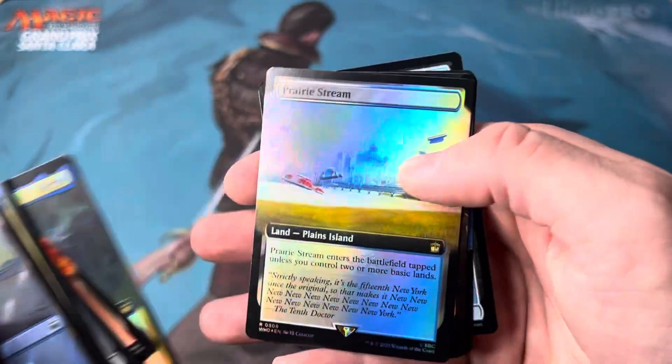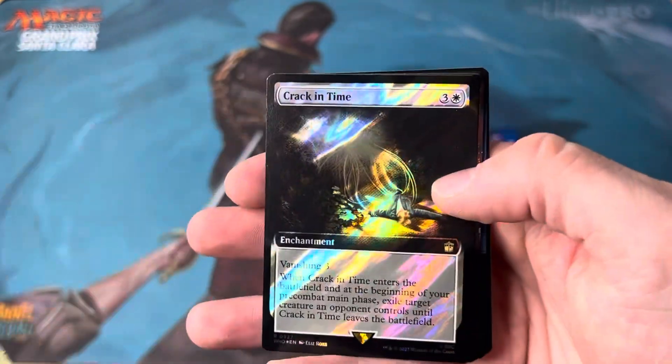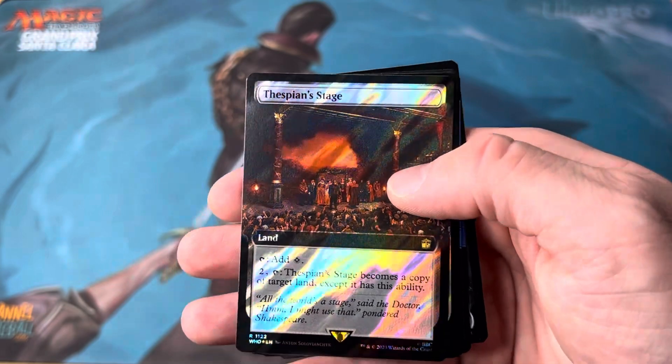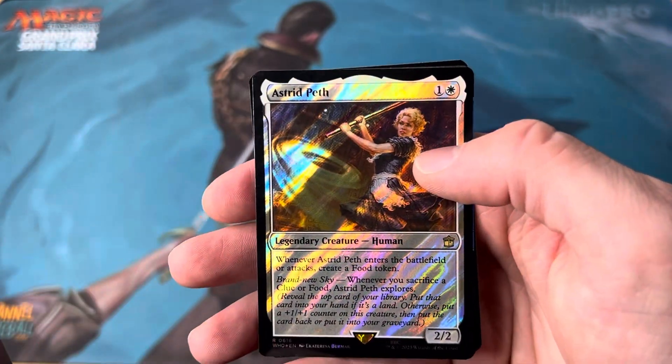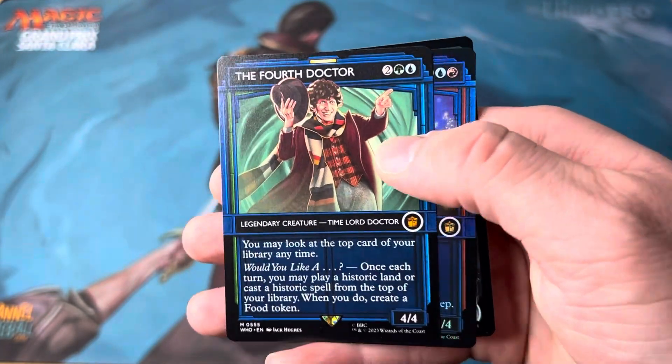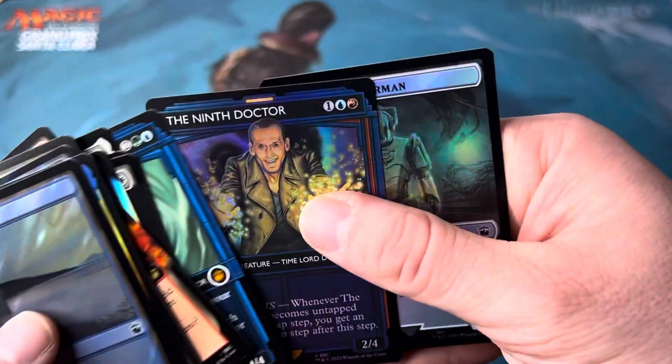The eighth Doctor. We've got a little bit of a different art there. Prairie Stream. Very cool. Crack in time. Thespian Stage. Astrid Path. Wow look at how pretty those are. The fourth Doctor. Very cool. The ninth Doctor. Very neat.